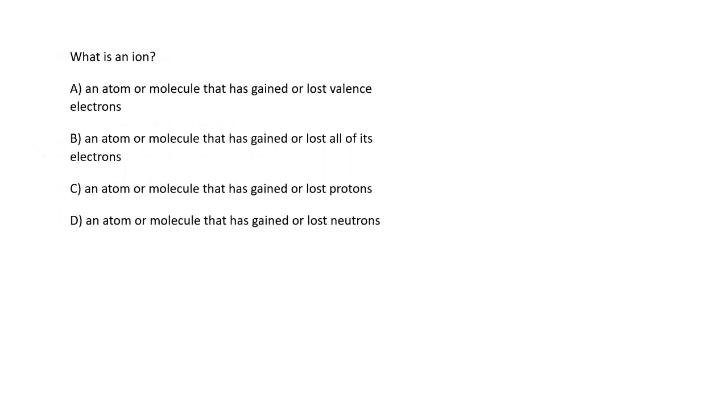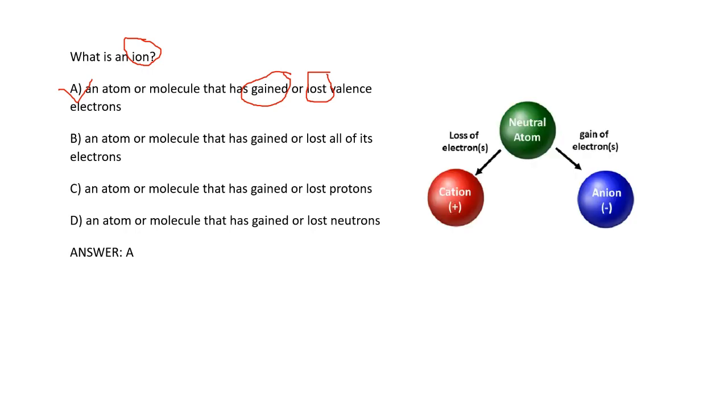What is an ion? Basically, when an atom gains or loses electrons, the electron numbers in the outer shell change, and in this case the atom becomes an ion. The right option is A. A neutral atom has the same number of protons and electrons.